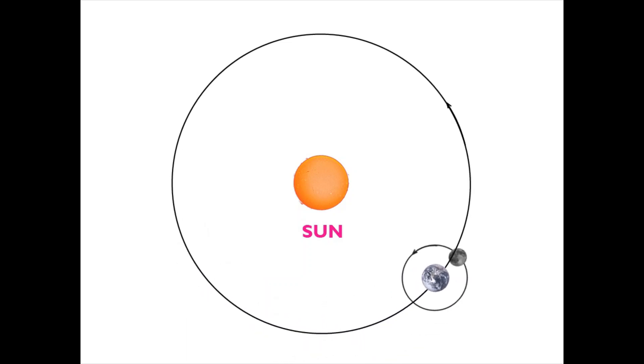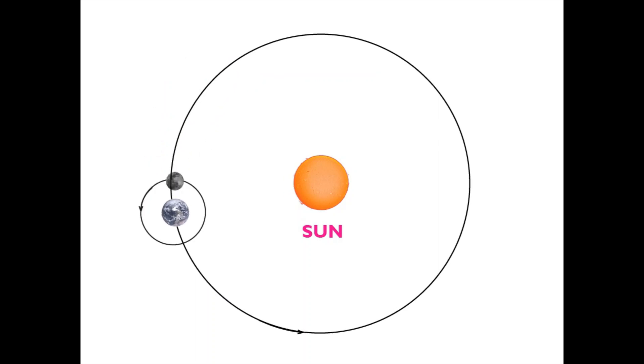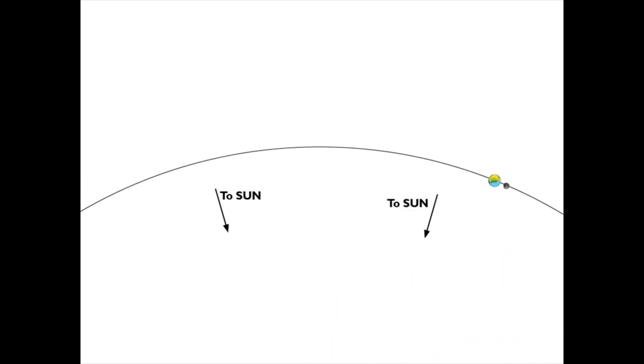However, because the orbital velocity of the Moon around Earth, 1 km per second, is small compared to the orbital velocity of Earth about the Sun, 30 km per second, the backwards movement never happens. There are no rearward loops in the Moon's solar orbit.